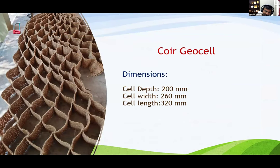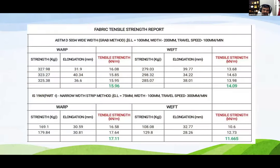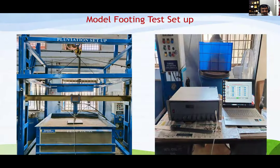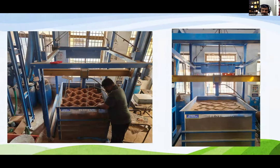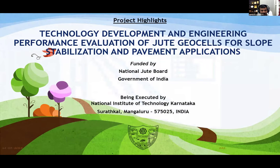Recently my student Sandeep Kumar obtained coir geocells industrially manufactured from coir board, and tensile strength testing showed very good tensile strength up to 16 kN per meter. Model footing tests were performed and very good results were obtained, with effective depth of 0.25 to 0.33 times the width of the footprint performing well. In another couple of minutes, I will take you through the currently ongoing project on jute geocells.